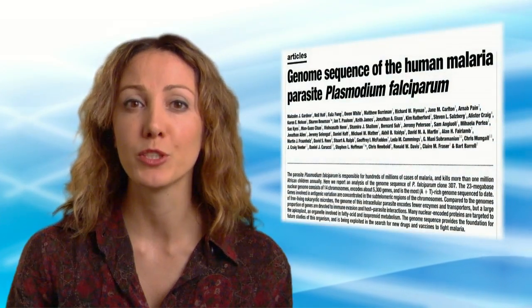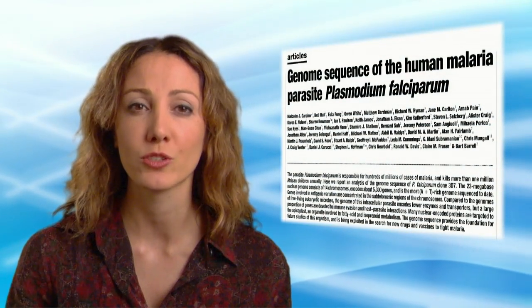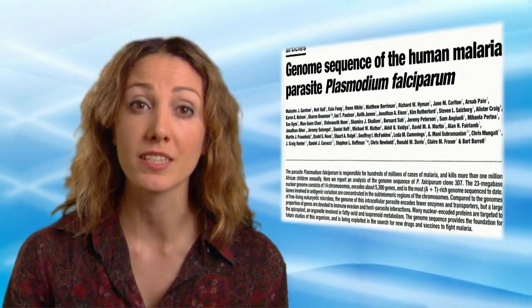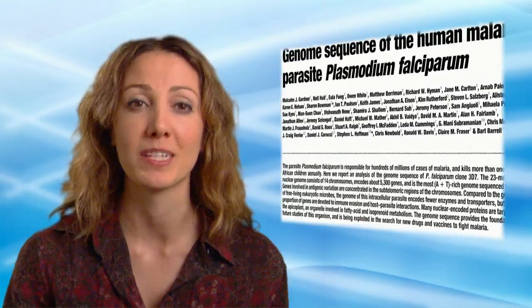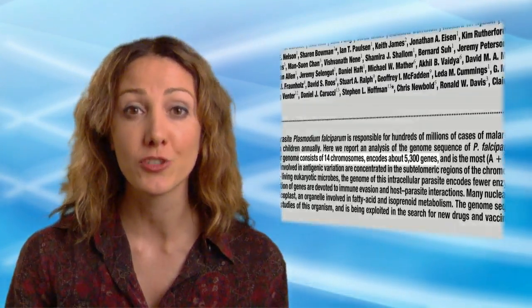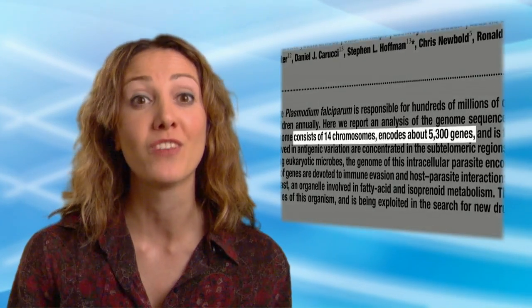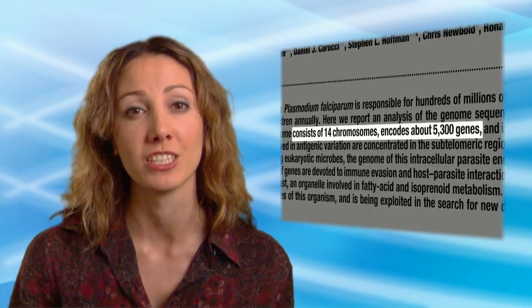We take the DNA sequences from each of the malaria strains and compare them to a reference sequence of the malaria genome. The reference sequence was produced a few years ago by an international consortium of scientists and told us that the malaria genome has 24 million letters in its genetic code, distributed across 14 chromosomes, and contains over 5,000 genes.